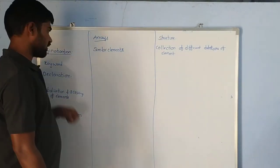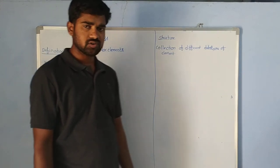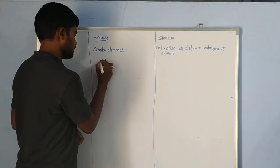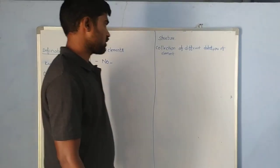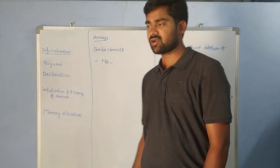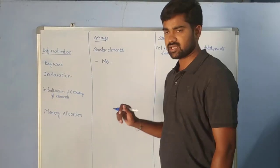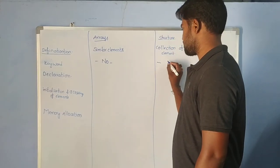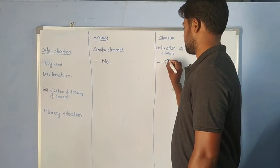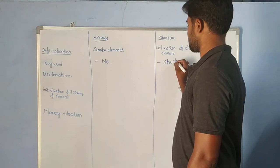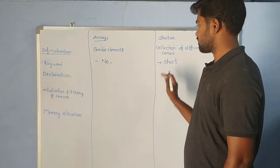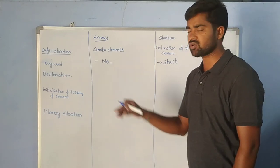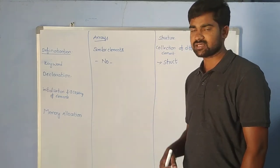Next, consider the keyword. For arrays, there is no keyword required to define them. For structures, however, we need to use a keyword — that keyword is called 'struct'. So we use the keyword 'struct' to define a structure, whereas for arrays, there is no keyword.